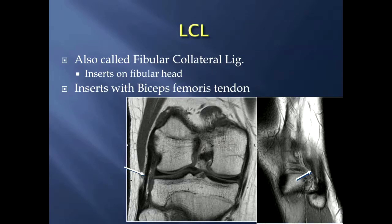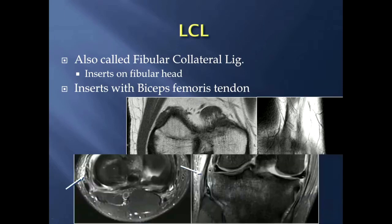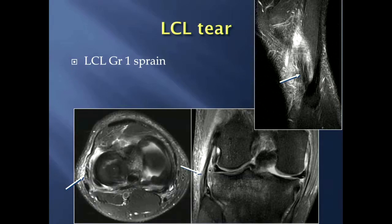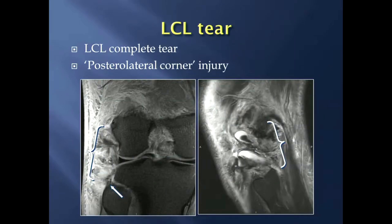The lateral collateral ligament is also called the fibular collateral ligament because it inserts on the fibular head, right adjacent to the biceps femoris tendon. Its origin is on the lateral femoral epicondyle, as seen in this coronal proton density-weighted image. Injuries are similar to the MCL: a grade 1 sprain shows edema on both sides of the lateral collateral ligament with the fibers looking intact and taut. For a complete tear, you can't find any lateral collateral ligament because it's torn, balled up, and retracted.